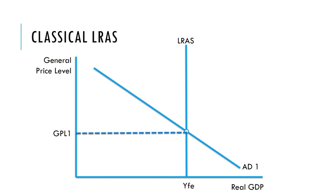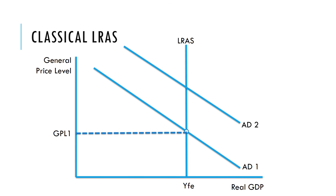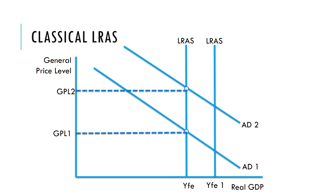We can also illustrate changes in AD and AS using the classical long-run aggregate supply curve and the Keynesian long-run aggregate supply curve. Under the classical LRAS, an increase in demand would just lead to an increase in inflation with no change in output. An increase in the economy's long-run productive capacity — a rightward shift of the LRAS — would lead to a higher level of output and a lower price level.